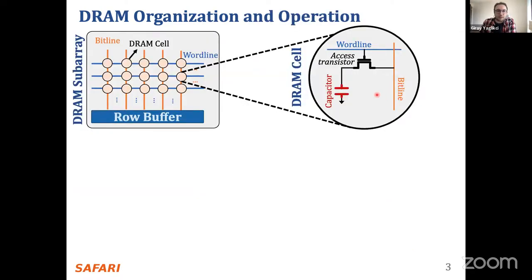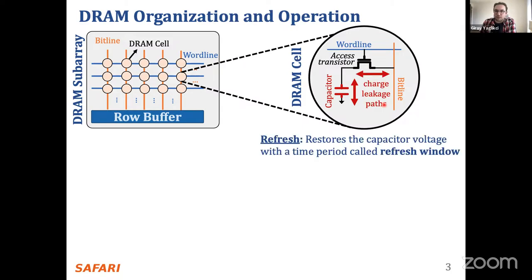When we look inside the DRAM cell, we have a capacitor and an access transistor connected to the word line and bit line. There are several charge leakage paths, which makes DRAM a volatile memory technology — meaning that once you write the data, after some time you might lose it. To avoid that, we need to perform periodic refresh operations that restore capacitor voltage within a time period called the refresh window.